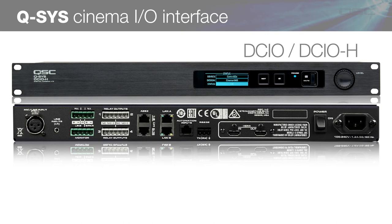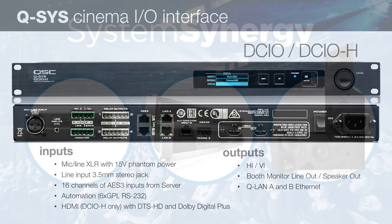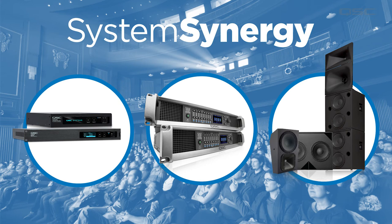Our DCI-O and DCI-O-H are not processors, but cinema-specific interfaces that serve as the audio I/O for each screen in a Q-SYS-enabled cinema complex. They include AES-3 inputs that come directly from a cinema server, mic line inputs, GPIO and relays, and even outputs for hearing impaired and visually impaired audio, plus an output with 10 watts of power for a booth monitor. The DCI-O, along with the Q-SYS Core processor, our network amplifiers, and digital cinema series loudspeakers make up the Q-SYS ecosystem for cinema installations, providing a cost-effective way to realize the synergy that comes from a full Q-SYS solution.